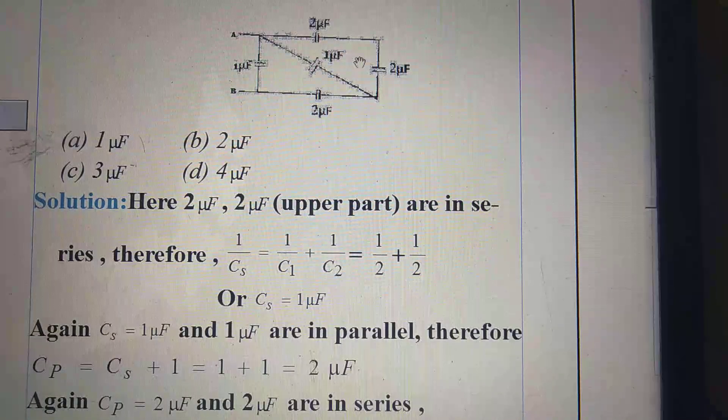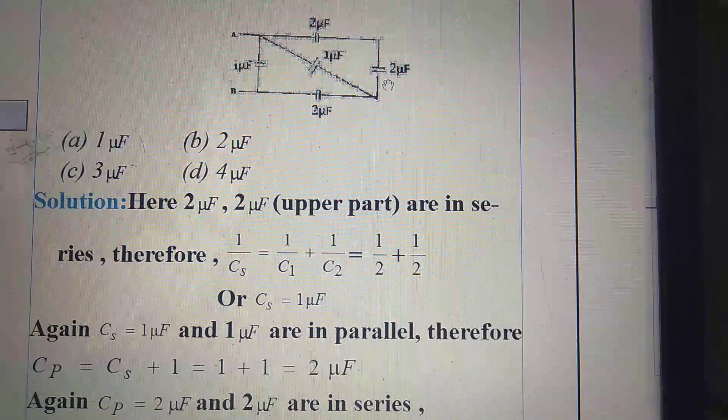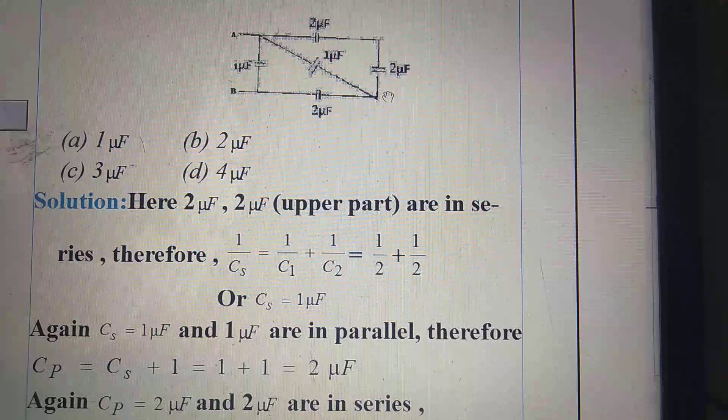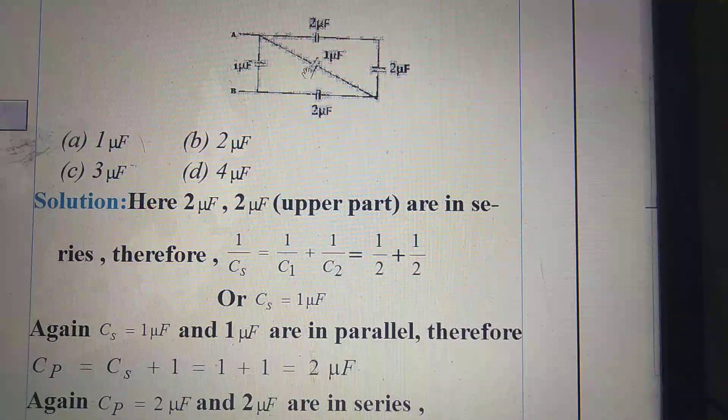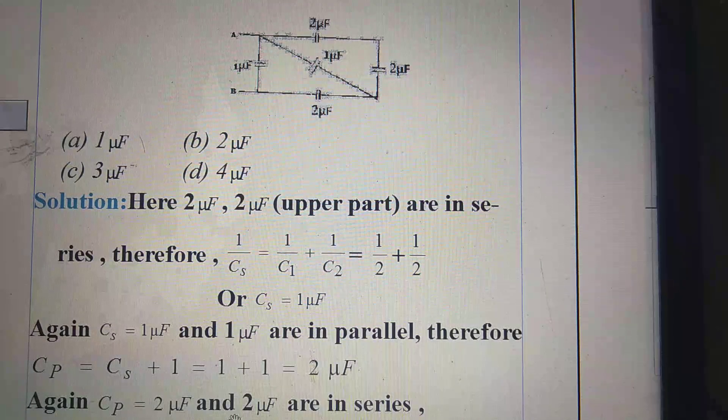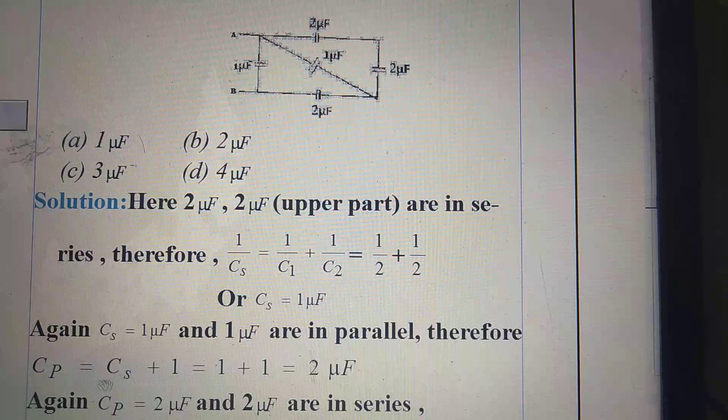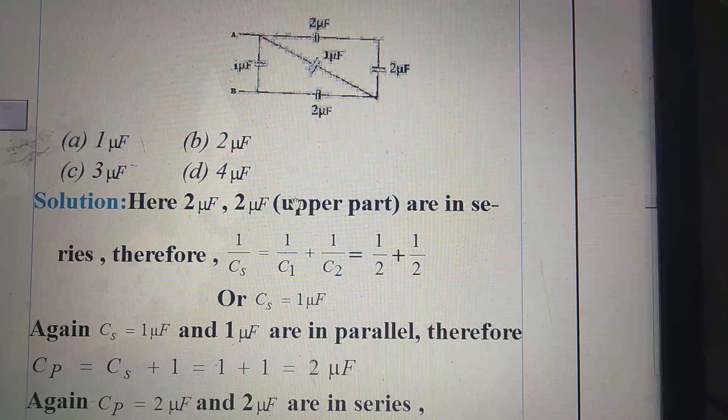Now, this 2 microfarad, 2 microfarad total value is Cs and its value is 1 microfarad. And here, this Cs is in parallel with 1 microfarad. Therefore, Cp equal to Cs plus 1, that is 1 plus 1, 2 microfarad.